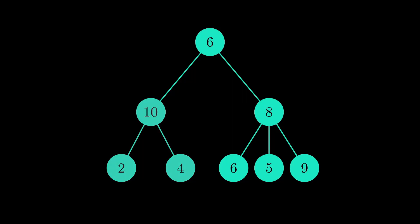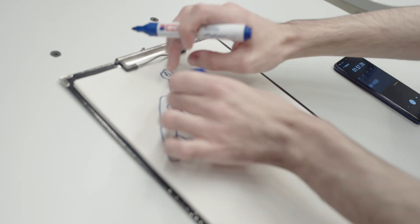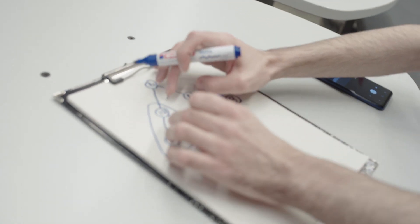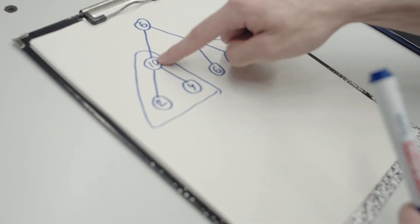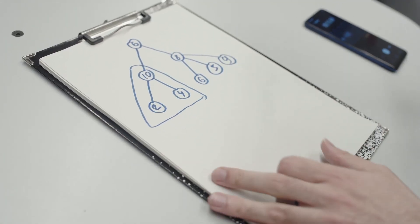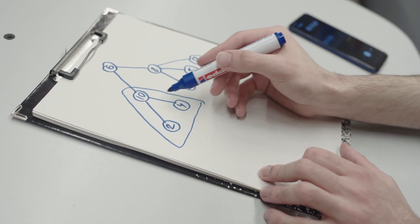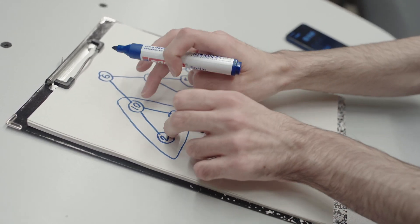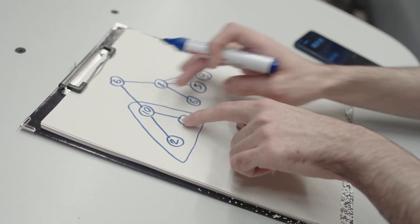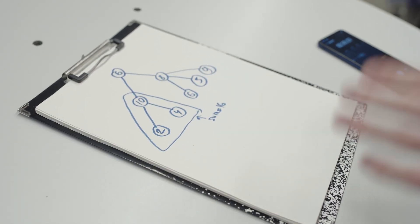We have this tree where each node has some value. First we have to define what a subtree is — a subtree is a tree inside the whole tree, with 10 being the root node. I want you to tell me the sum in some subtree — the sum in this subtree is 16.